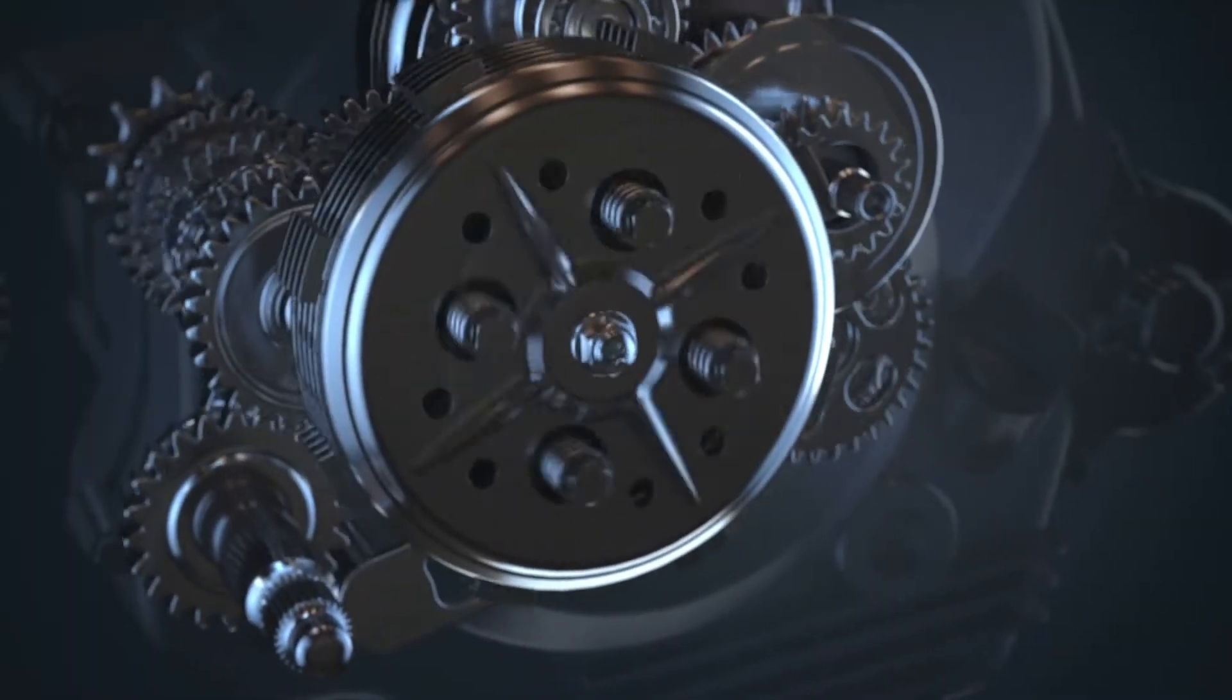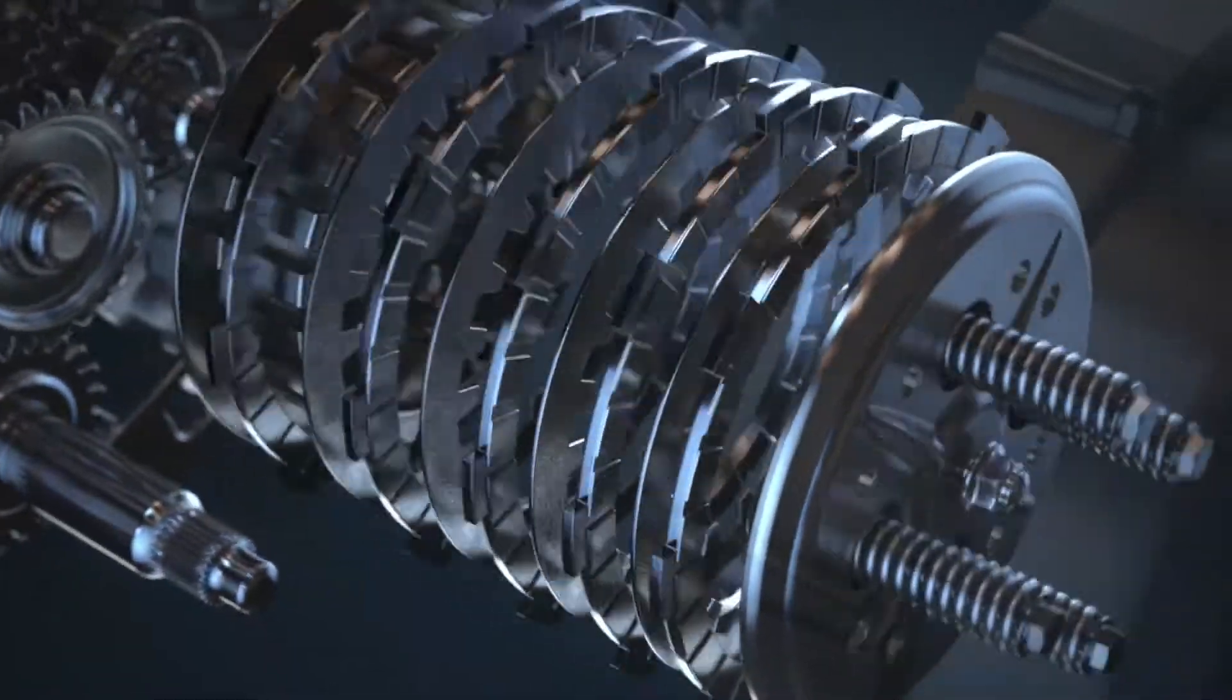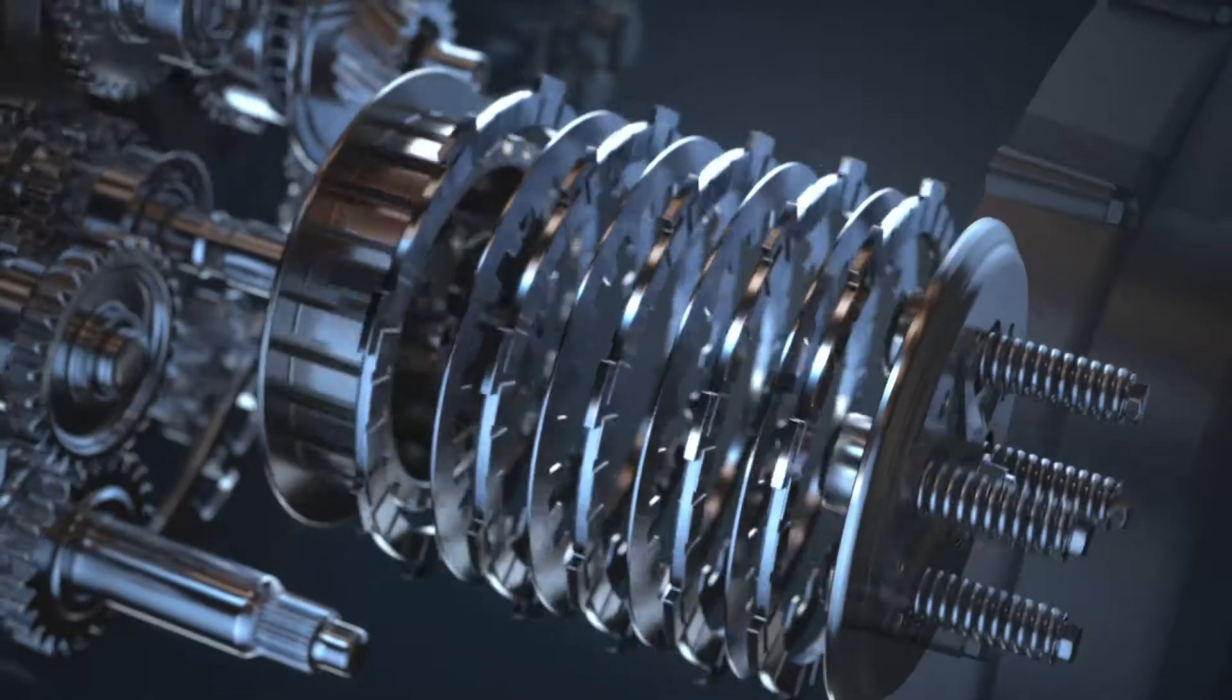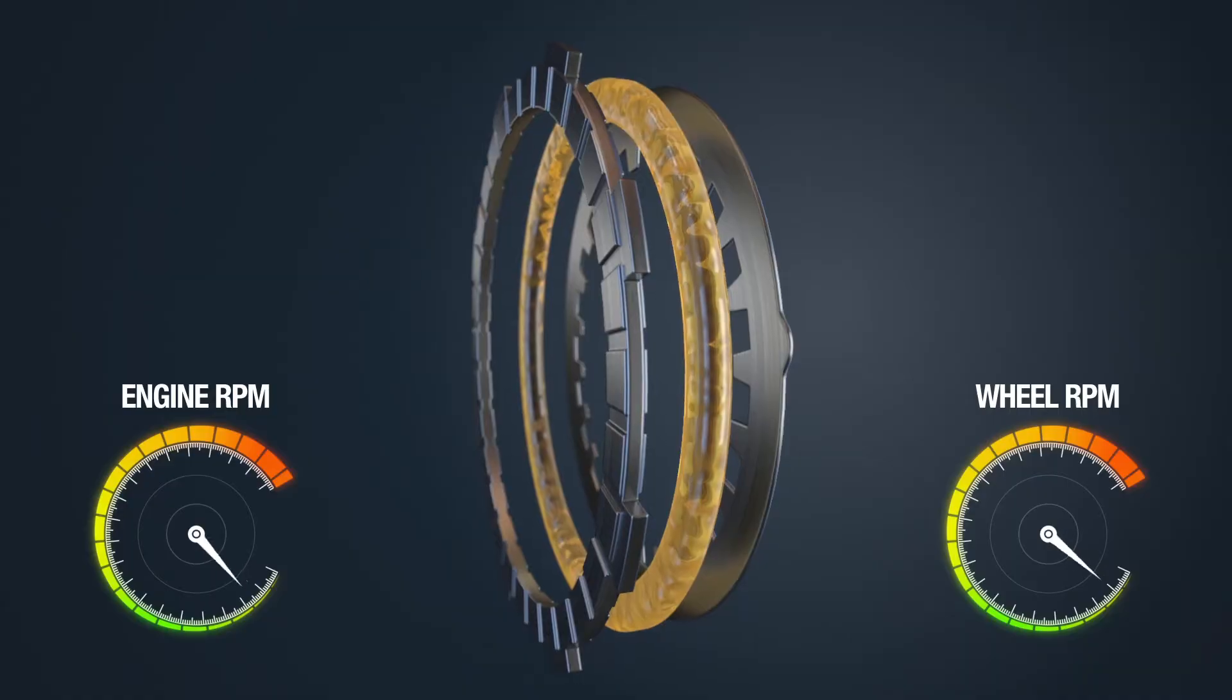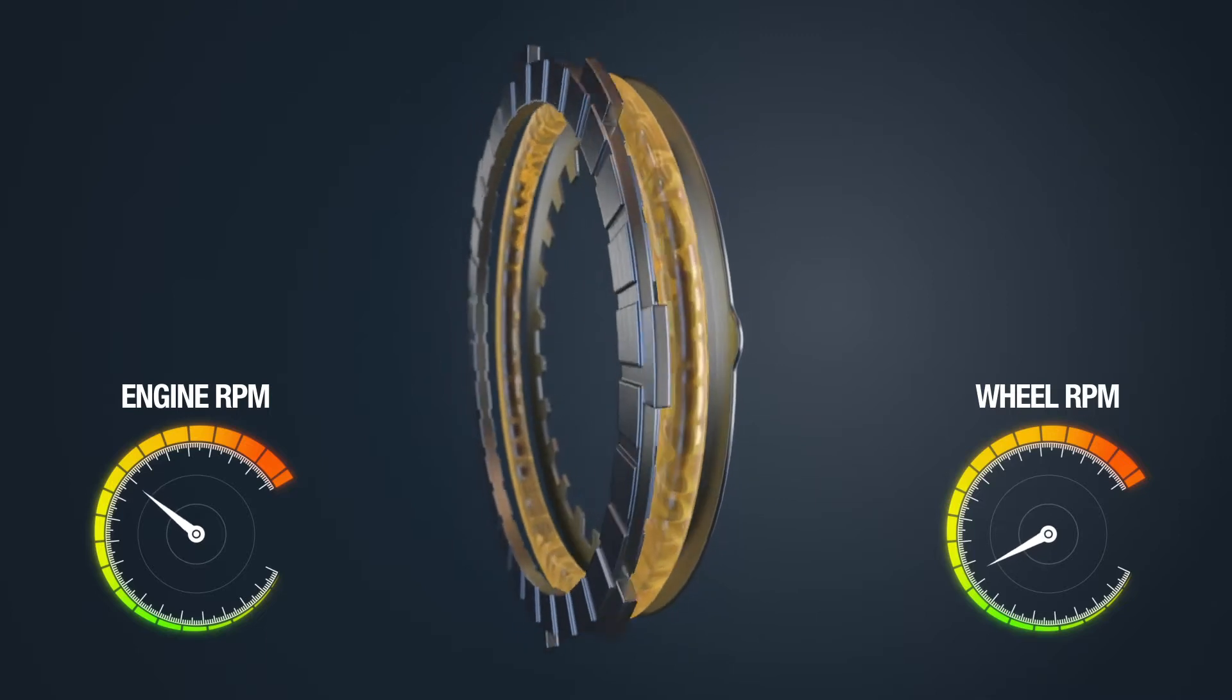The wet clutch is a vital part of the engine as it is required to transfer power smoothly and efficiently from the engine to the wheels. As it becomes engaged, the power gets transferred through friction between the clutch plates.